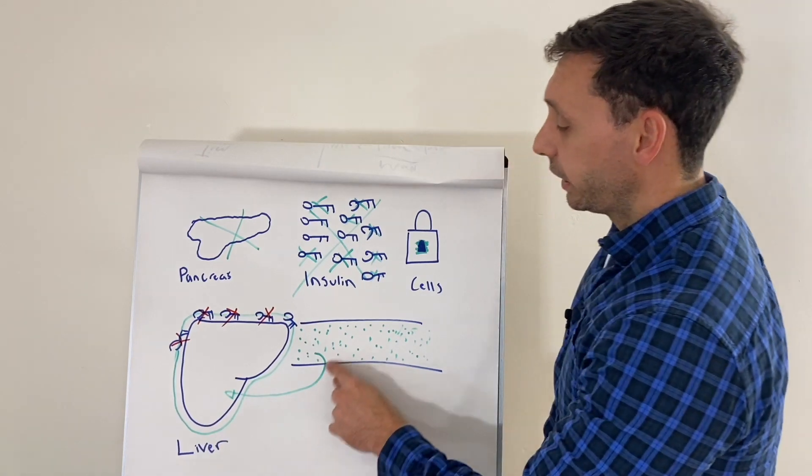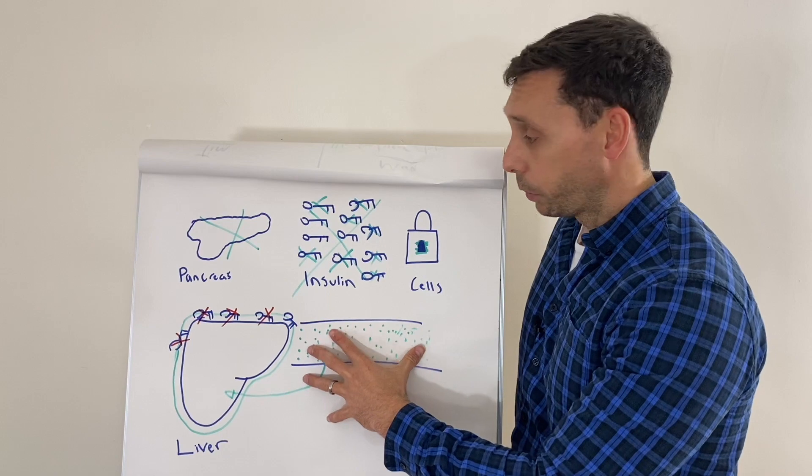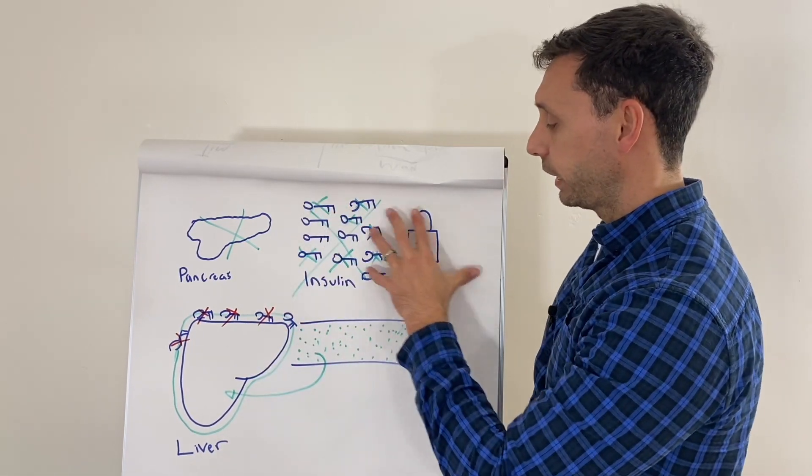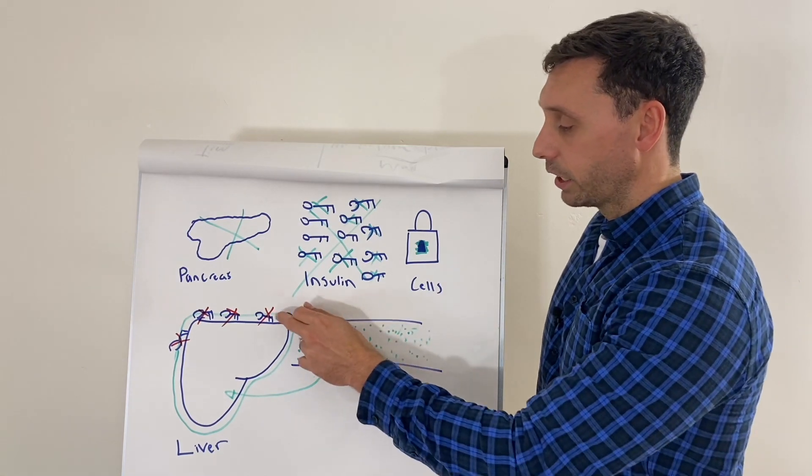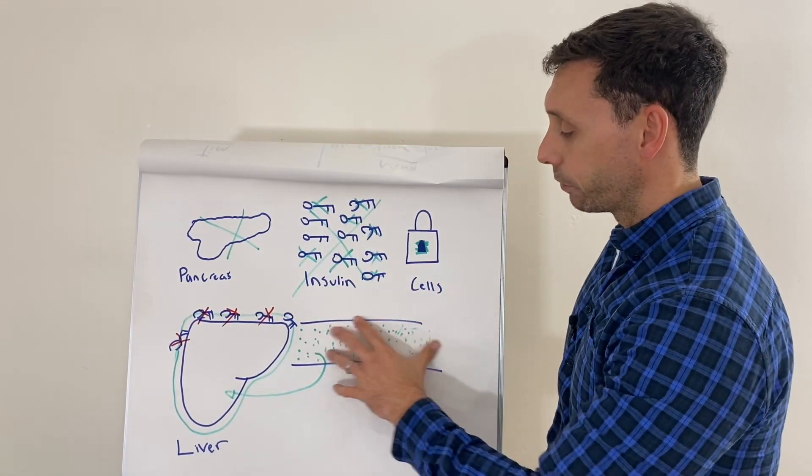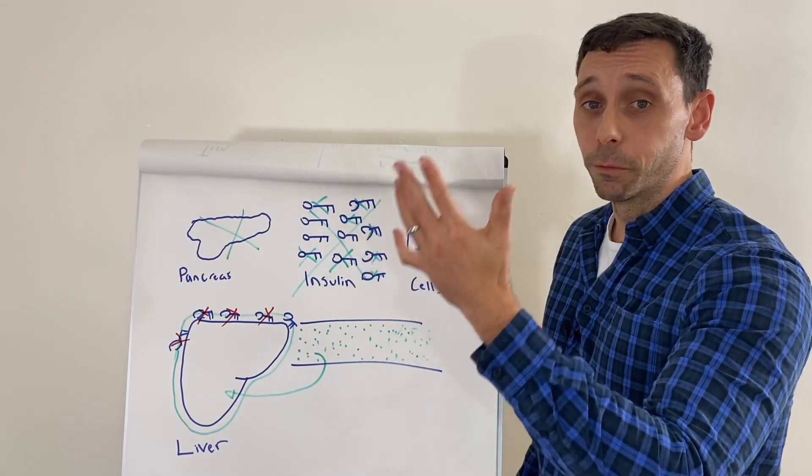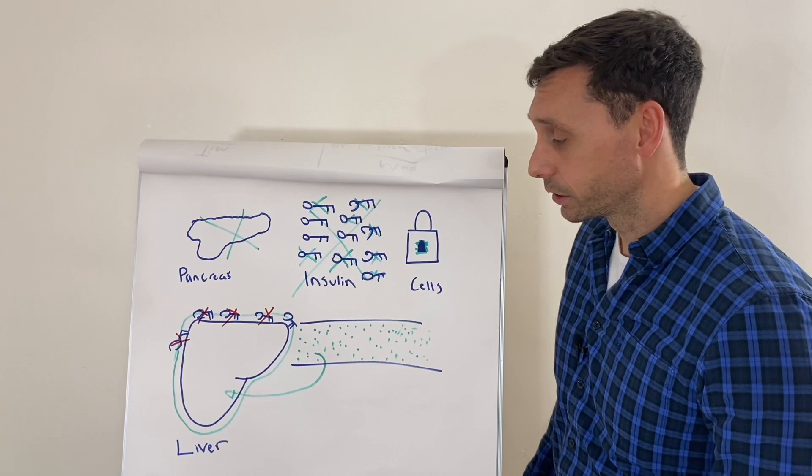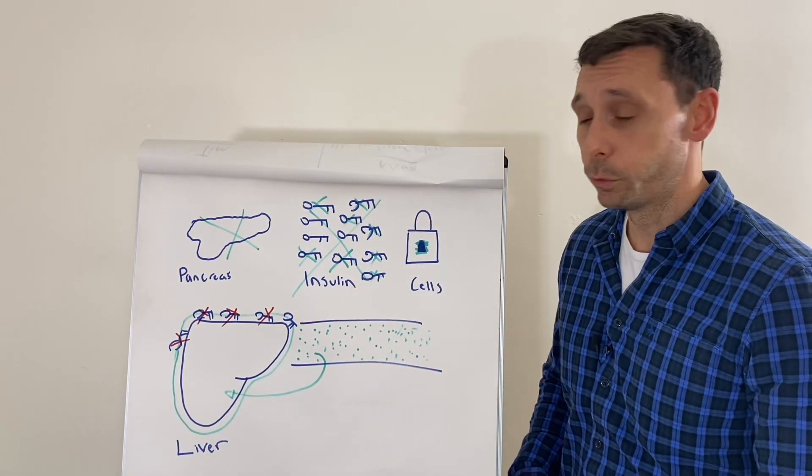So it basically leaves us with this double-pronged effect. Our baseline glucose level is too high. We haven't got enough keys fitting the locks around the body. And when you eat, as a result, your body's unable to store the glucose or use it for energy. And therefore it remains in the blood. And as a result, you end up with hyperglycemia, high glucose levels, higher foundation, and also too much more when you've eaten food.